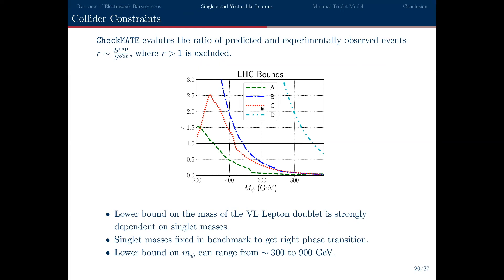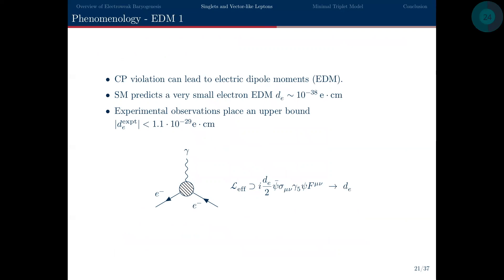We just chose four benchmark points — this is not a complete parameter scan — but the key takeaway is that for the baryogenesis scenario with vector-like lepton mass at 500 GeV, for benchmark A the lower mass bound can be as low as 300 GeV. So there's sufficient room to explain the origin of the baryon asymmetry while still satisfying collider constraints.